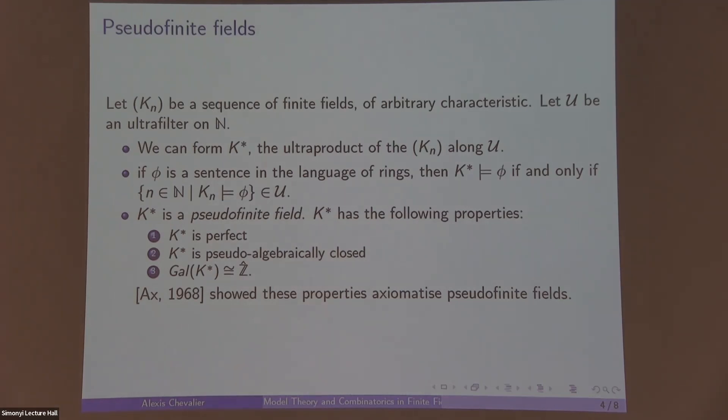Pseudo-algebraically closed means that any variety over our field which is absolutely irreducible, so which is irreducible over K-bar, contains a rational point. We can see that these statements are also satisfied by any finite field. This doesn't force the field to be infinite. Finite fields are pseudofinite and they can have any characteristic.